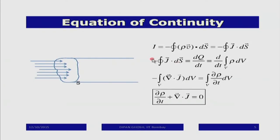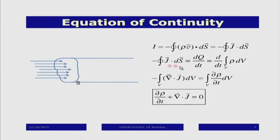Current is charge density times velocity dotted with dS — that is my definition of current density. So −J·dS is the rate at which the total charge is changing in that volume, and Q = integral of rho dV. Using the divergence theorem to convert J·dS to divergence of J, and combining, I get the equation d(rho)/dt + del·J = 0.